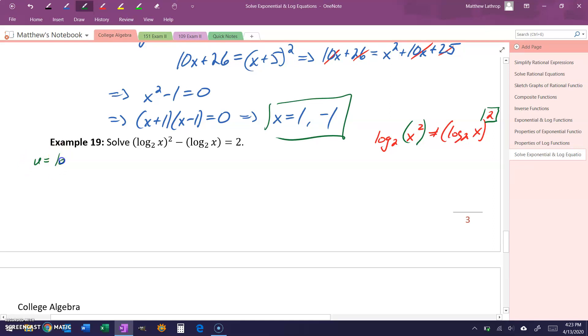What we'll do is let u equal the log base 2 of x, meaning we can rewrite this as u squared minus u, and if we subtract 2 over to the other side, we get minus 2 is equal to 0.